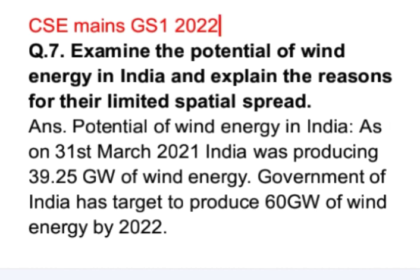As on 31st March 2021, India was producing 39.25 GW of wind energy. The Government of India has a target to produce 60 GW of wind energy by the year 2022.